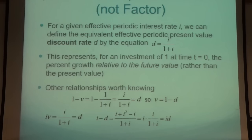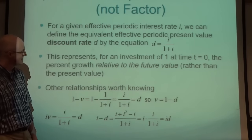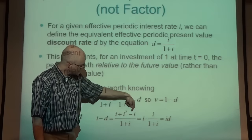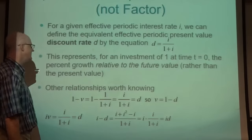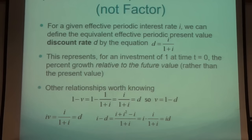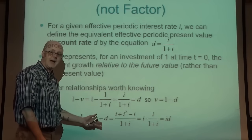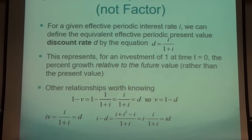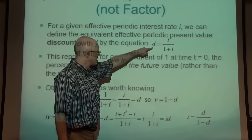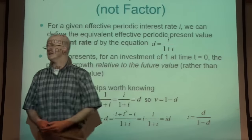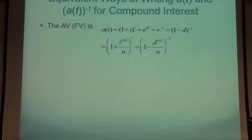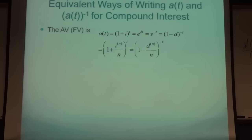It's also useful to note that i - D = i·D (the 'id equation'). Since i·D is positive, i must be greater than D (because i minus D is positive). Solving the original equation for i as a function of D gives i = D/(1-D).